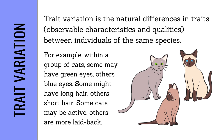Now let's talk about variations. Trait variation is the natural differences in traits — observable characteristics and qualities — between individuals of the same species. For example, within a group of cats, some may have green eyes, others blue eyes. Some might have long hair, others short hair. Some cats may be active, others are more laid back.